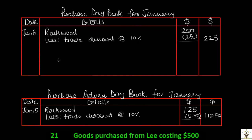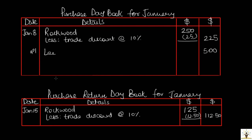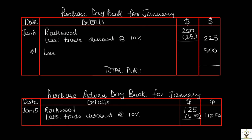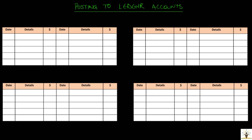On Jan 21, goods were purchased from Lee costing $500 — no discount involved, so $500 is recorded directly in the last column. On Jan 24, a computer was purchased from Rockwood costing $600 subject to trade discount. However, a computer is a non-current asset, not goods, and this book records only purchase of goods. Hence, this transaction will not be recorded in the purchase day book. After recording all transactions, total purchases for the month = $725, and total purchase returns = $112.50.